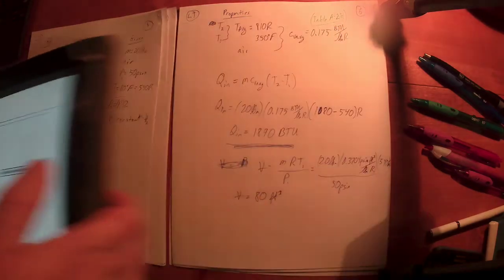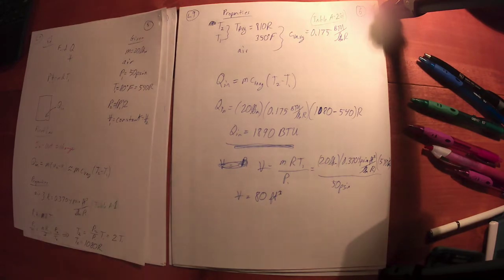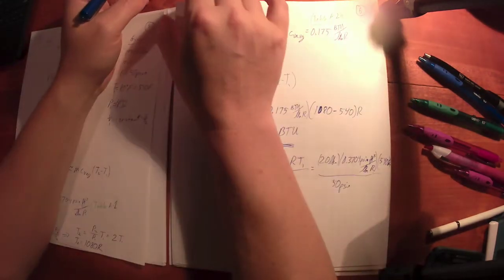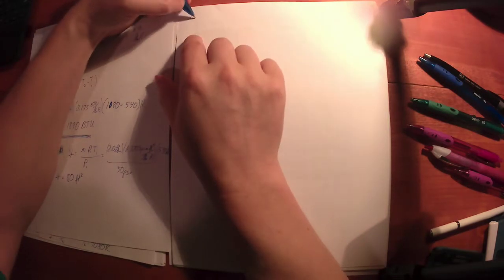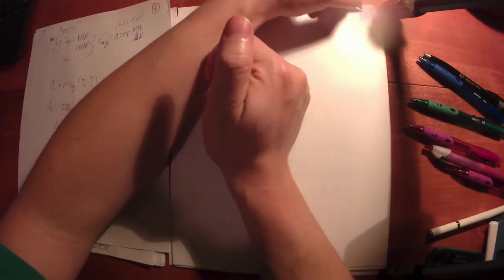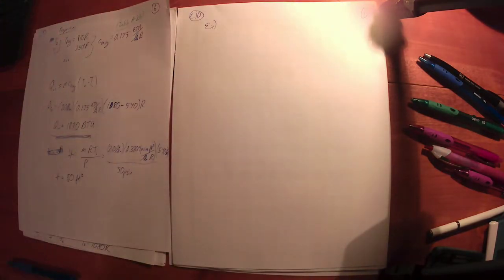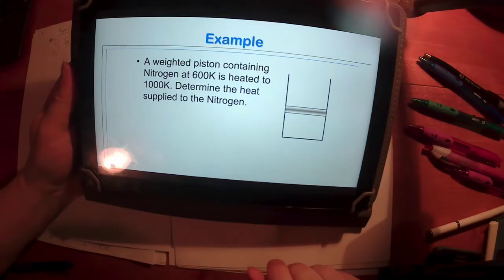Let us continue. This is going to be Lecture 10. I've got an example to start us out - one more closed system example. Start with an example here, page one, got a timer going, we are ready to go. Got a weighted piston containing nitrogen at 600 Kelvin heated to 1000 Kelvin, determine the heat supplied to the nitrogen.